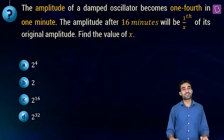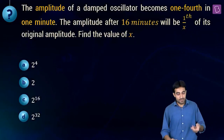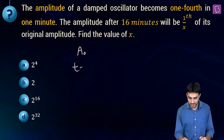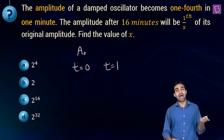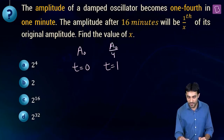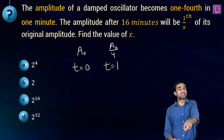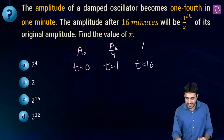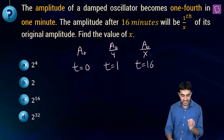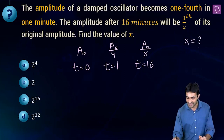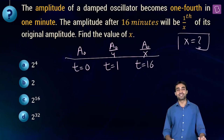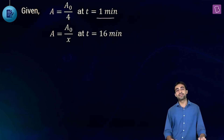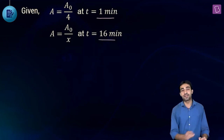Next question on damping: the amplitude of a damped oscillator becomes one-fourth in one minute. Let the initial amplitude be A₀ at t = 0. At t = 1 minute, amplitude = A₀/4. The amplitude after 16 minutes is one-x of its original amplitude, i.e., A₀/x. Find the value of x.